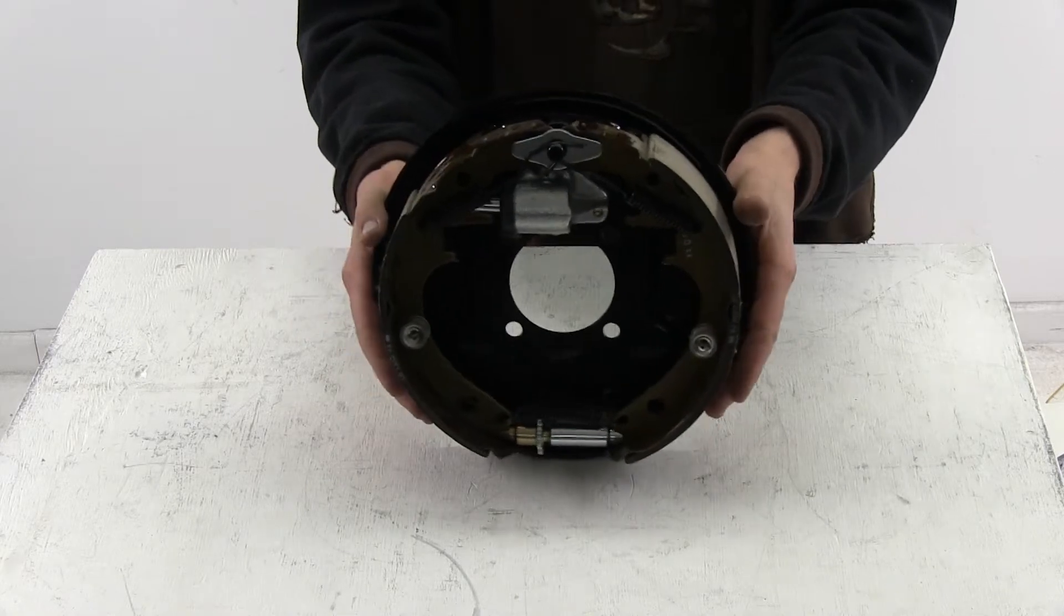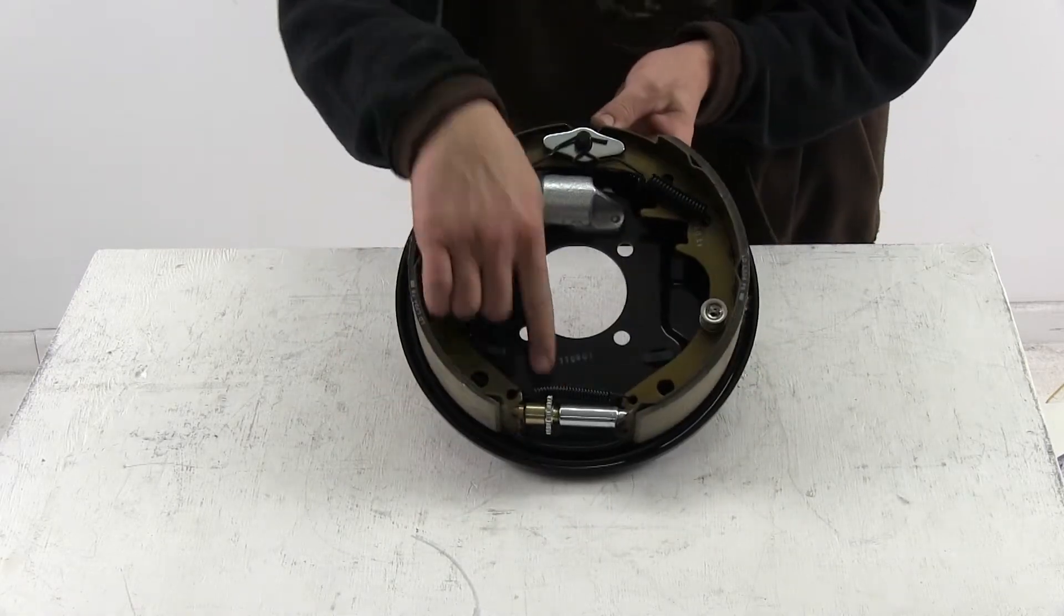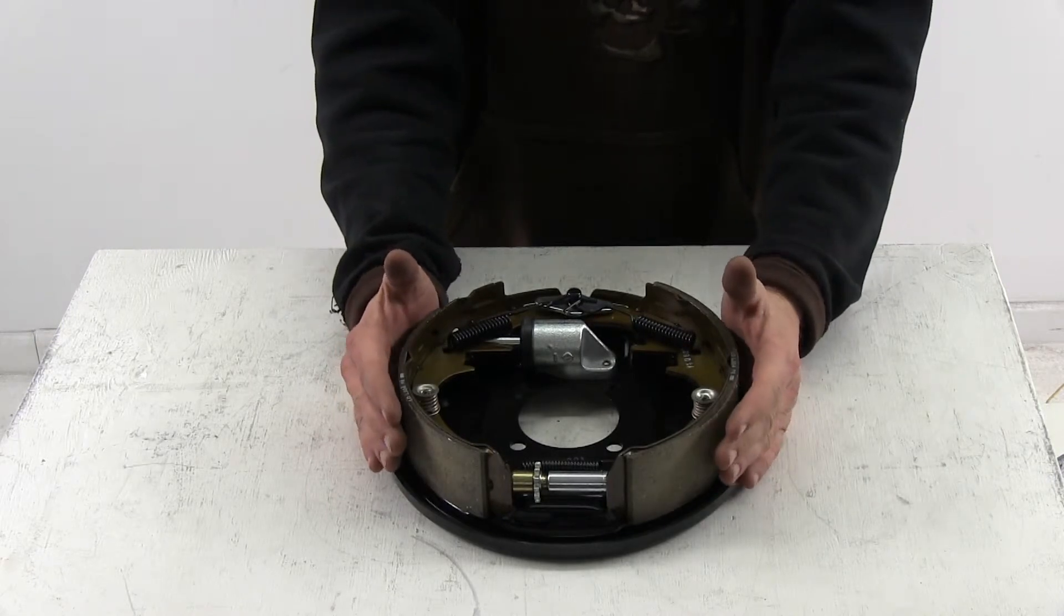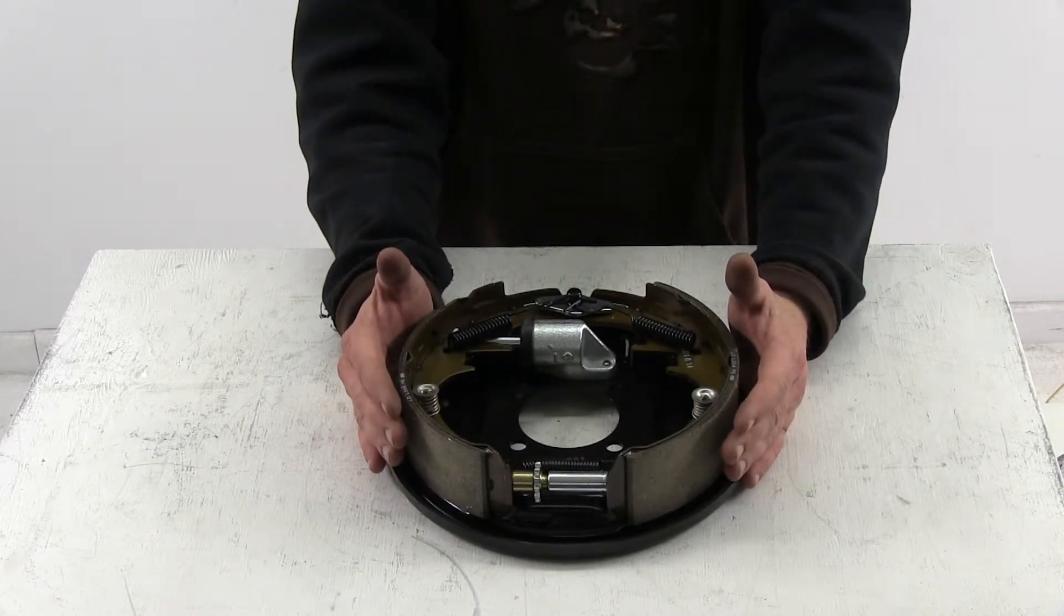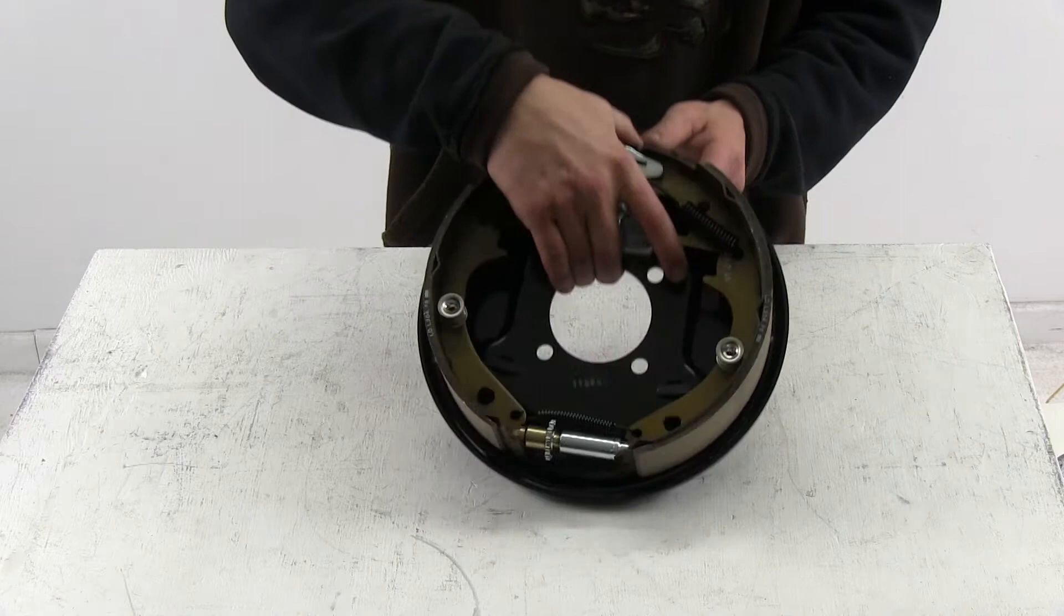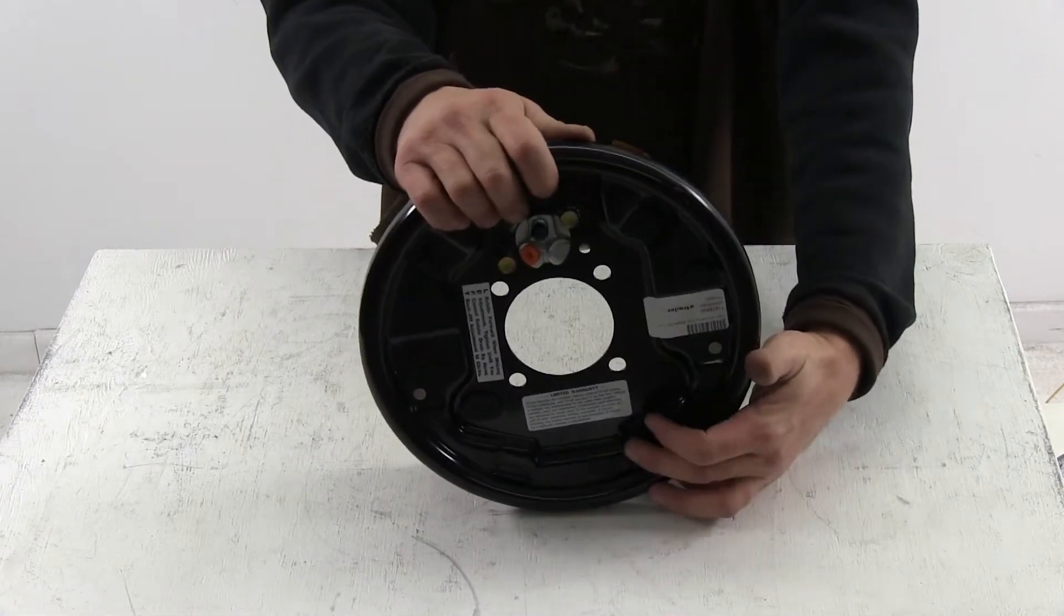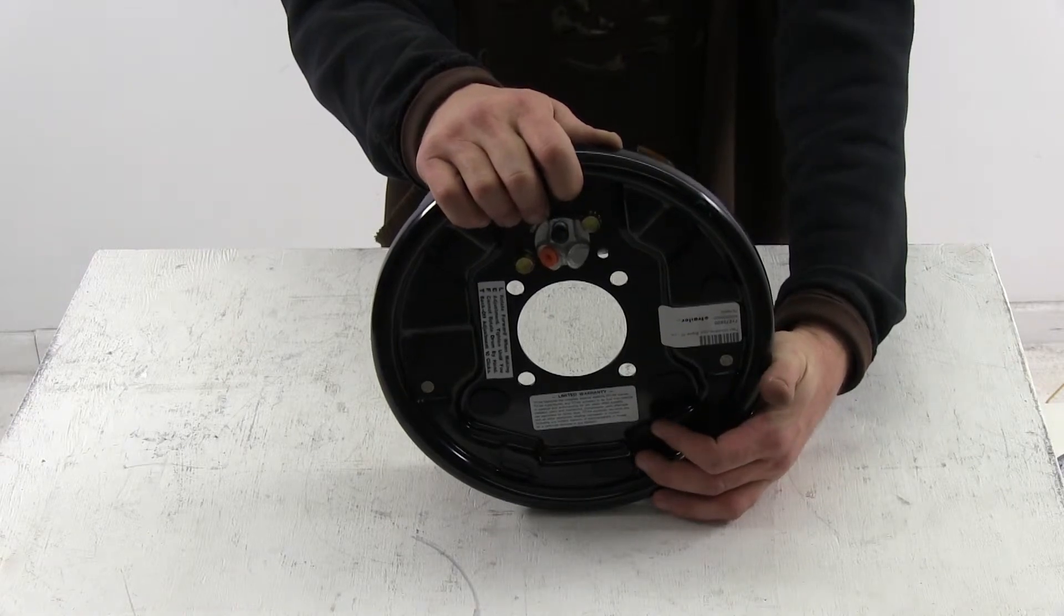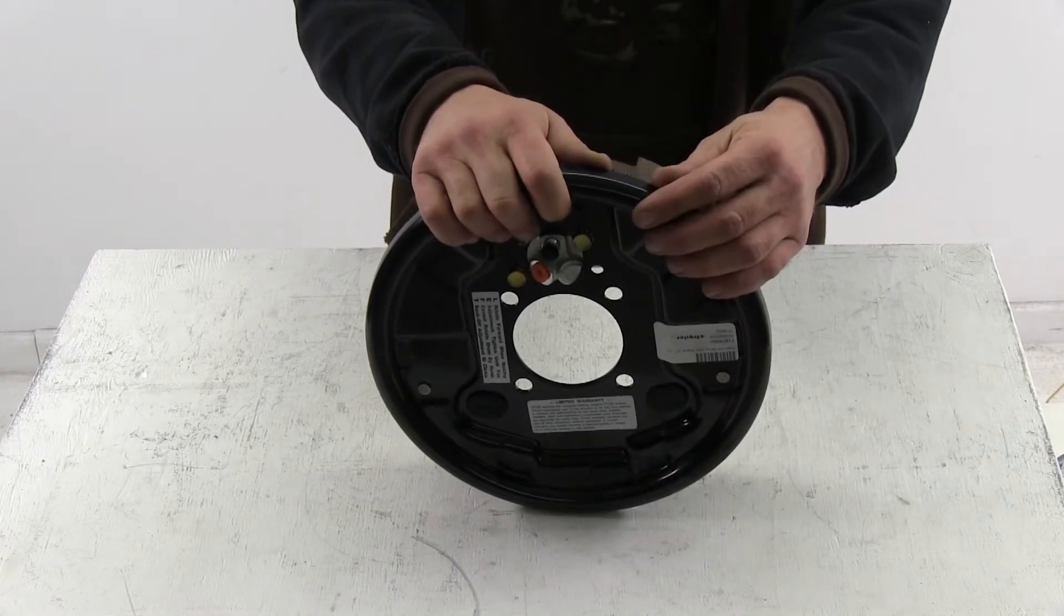When you initially set up your brake assembly you'll need to make an adjustment with the star wheel so that the brake linings will come out and meet evenly with the brake drum linings. Then it will also require maintenance over time as the linings wear down, which you can do through the access hole here in the backing plate so you can adjust the star wheel out to take up any clearances that are necessary.